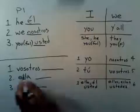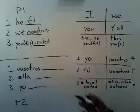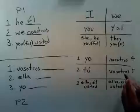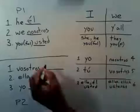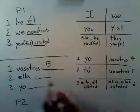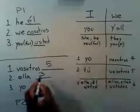Now on page number two, what you are going to do is identify the box number, which is very important. So vosotros is right here — that is box number five. Ella is box number three, so I'm going to write a three. Yo is box number one.